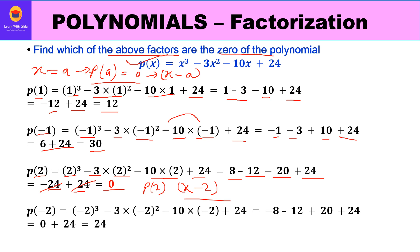We continue by hit and trial to find more factors. Replacing x by -2: (-2)³ - 3(-2)² - 10(-2) + 24 = -8 - 12 + 20 + 24 = 24. Not zero.